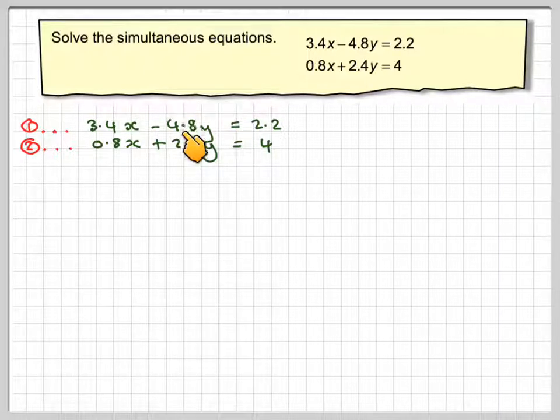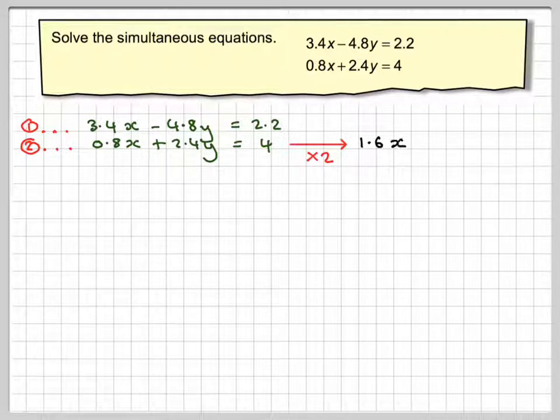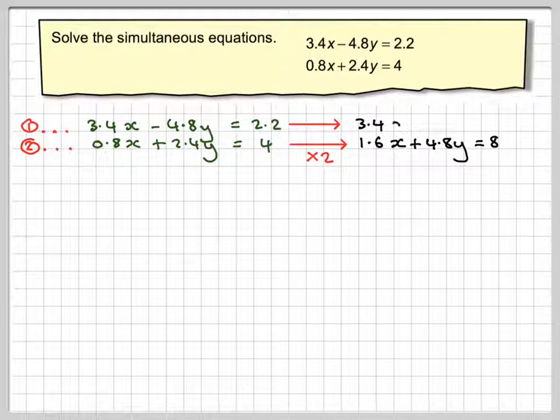We notice here, this is 4.8 and this is 2.4. So if we multiply equation 2 by 2, we're going to get 1.6x plus 4.8y equals 8. And we'll keep the top one the same.